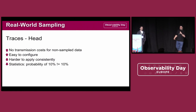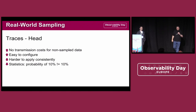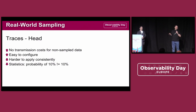The advantages of head sampling are that we don't have any transmission costs for non-sampled data. It's relatively easy to configure — when you start with tracing you're typically taught how to do sampling for your services, and some libraries even come with sampling already on, reducing the amount of data by default.